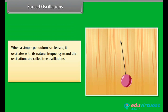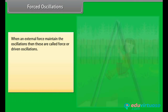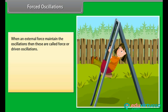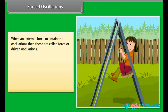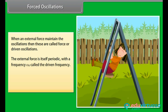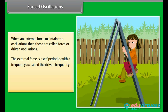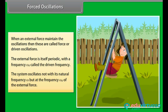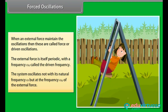Forced oscillations: when a simple pendulum is released, it oscillates with its natural frequency ω and the oscillations are called free oscillations. All free oscillations eventually die out due to damping forces. When an external periodic force maintains the oscillations, these are called forced or driven oscillations. The external force has frequency ωd, called the driven frequency, and the system oscillates at ωd rather than its natural frequency ω.